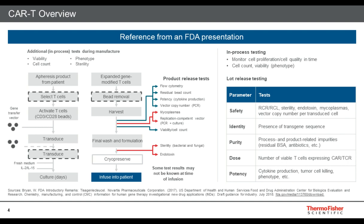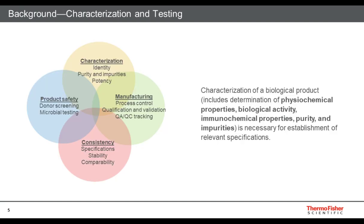One thing that's really important to understand when it comes to cell and gene therapy is that we're defining the process as much as we're defining the cell therapy. While you're manufacturing the cell or gene therapy, there's a lot of in-process monitoring and testing that occurs. You're characterizing the process as much as that endpoint. It's critical to understand and monitor the therapy throughout the process itself, as well as what your defined release criteria is at the end when you're administering it back into the patient.